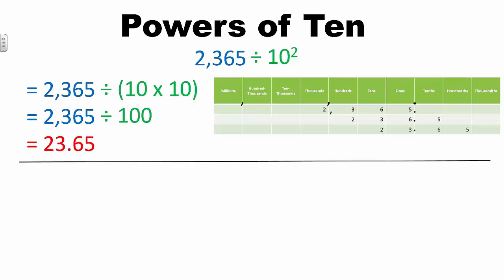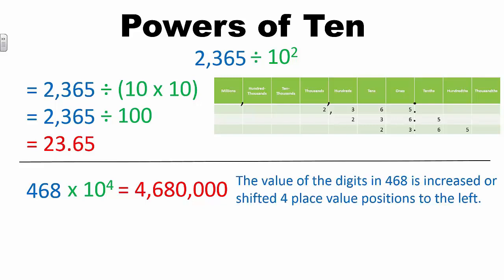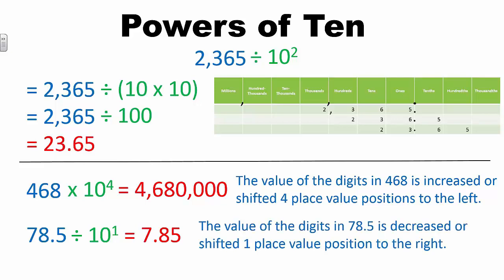After exploring powers of 10, students should be able to make generalizations when multiplying and dividing numbers by multiples of 10. For example, 468 times 10 to the fourth equals 4,680,000 because 10 to the fourth is equal to 10,000. In another example, 78 and 5 tenths divided by 10 to the first equals 7 and 85 hundredths because 10 to the first is equal to 10, meaning the place value of the digits is decreased or shifted by one place value position to the right.